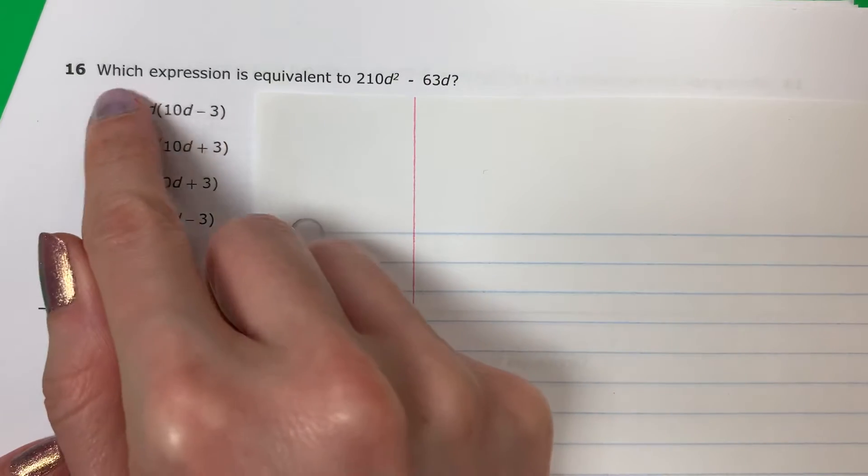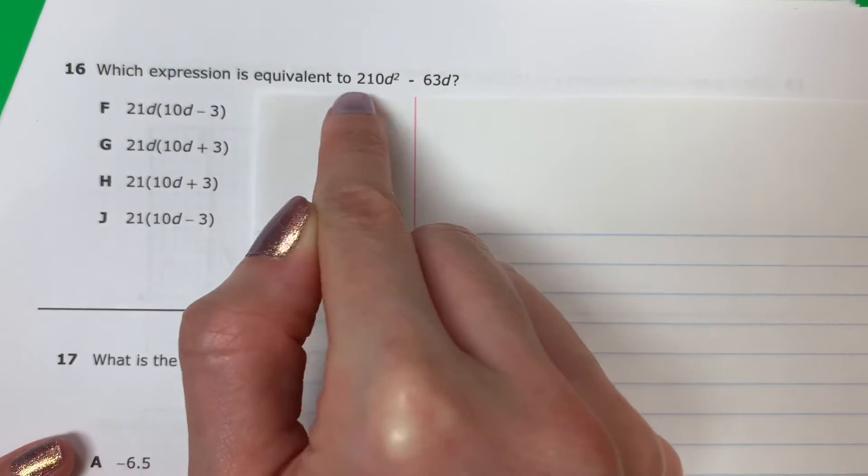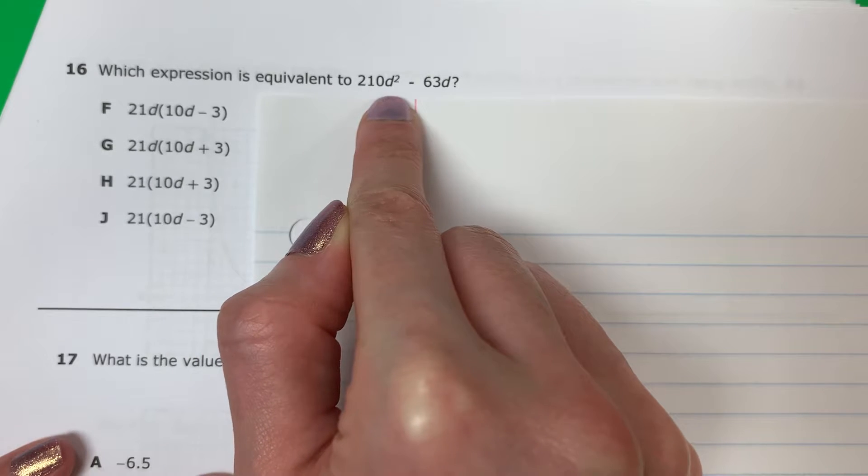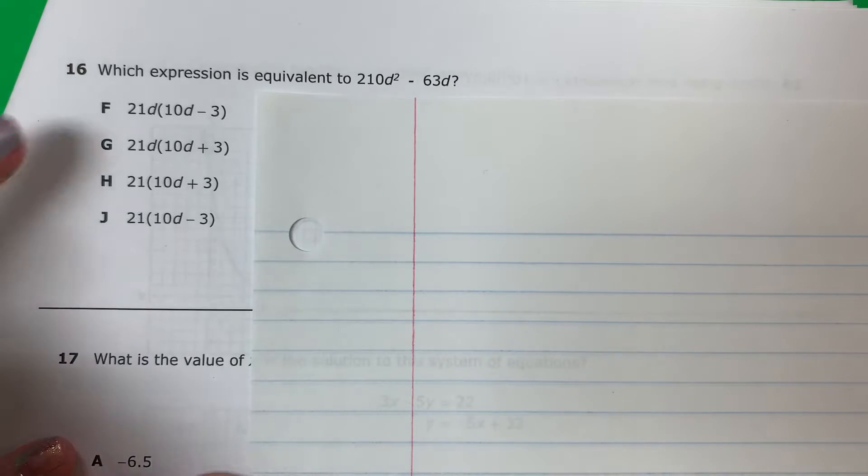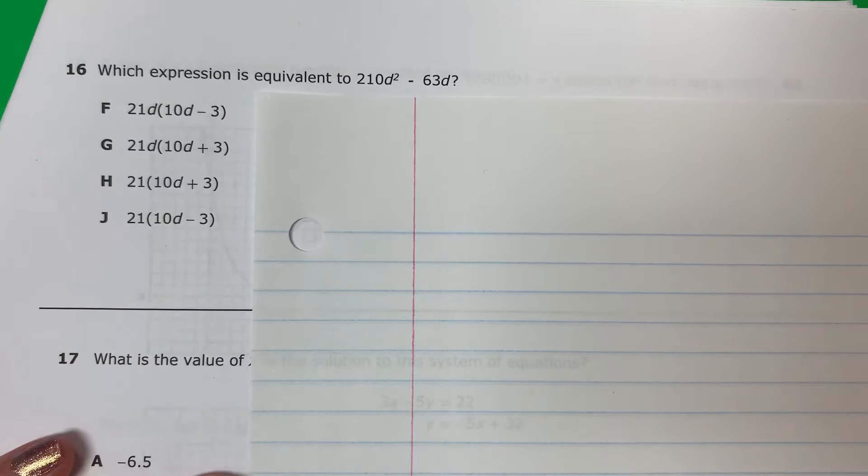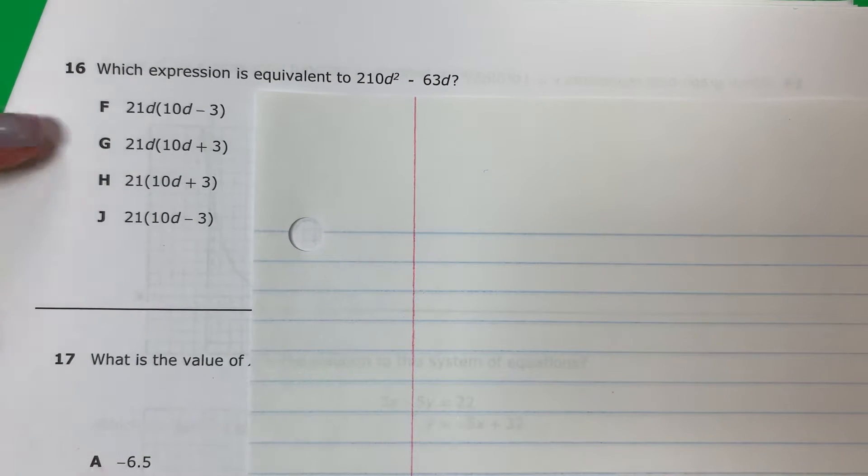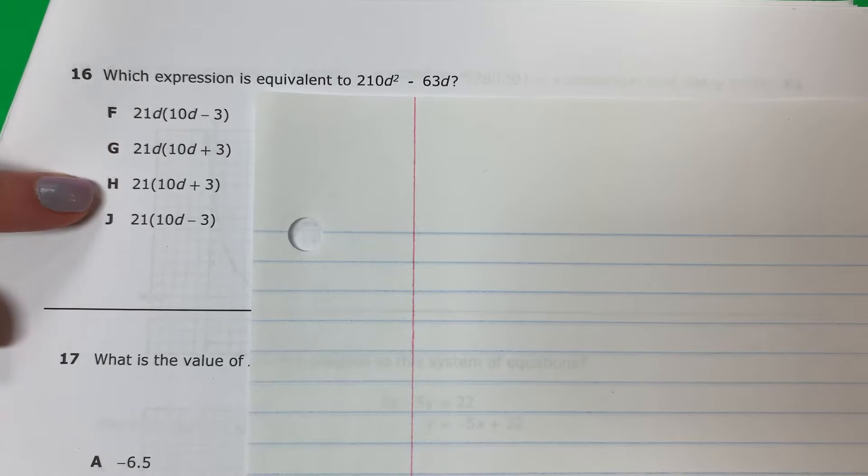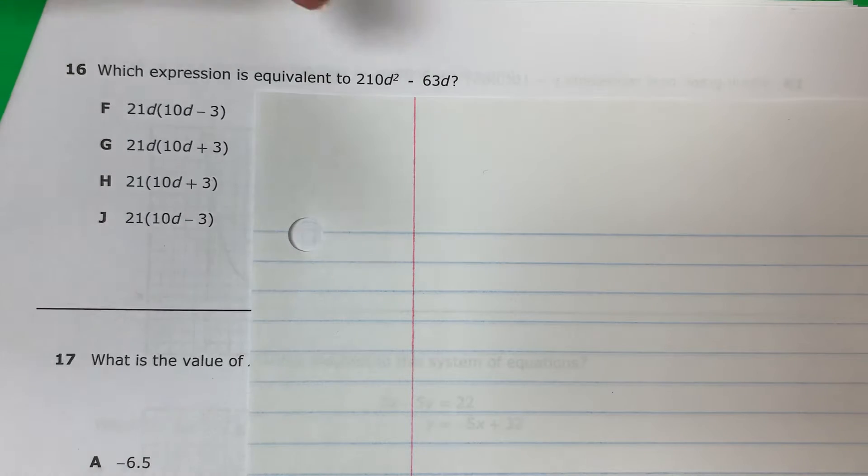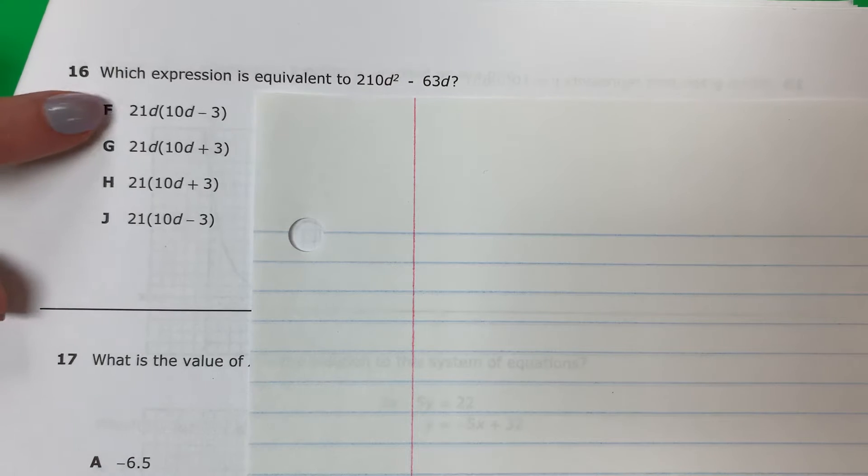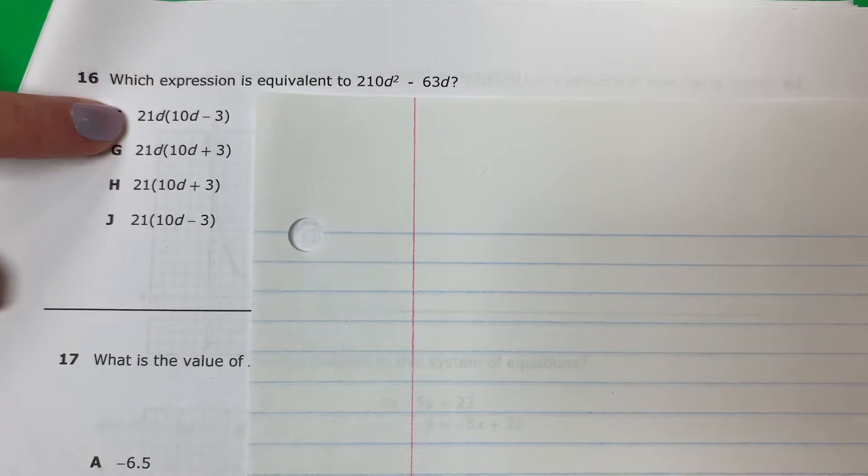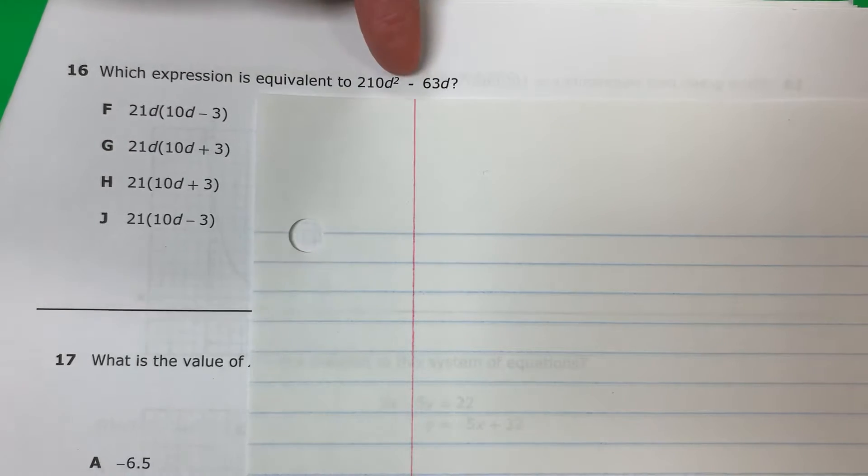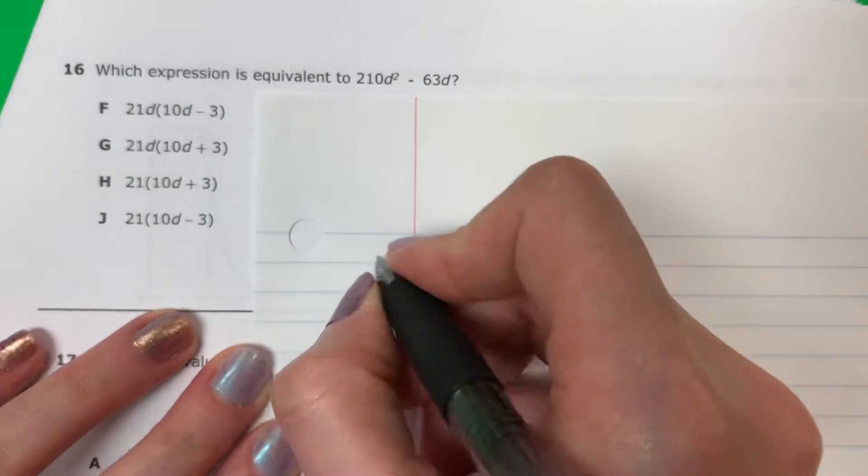Question 16. Which expression is equivalent to 210d squared minus 63d? And here are your answers. So what I'm going to do is I'm going to take each question and I'm going to solve it to see which one will give me this answer. Voy a usar cada respuesta y voy a resolverla para ver cuál va a darme esta respuesta. So let's go ahead and do F. Ahora la F.